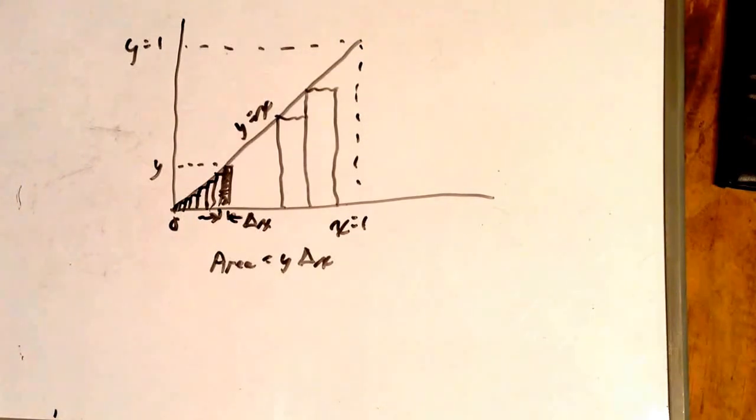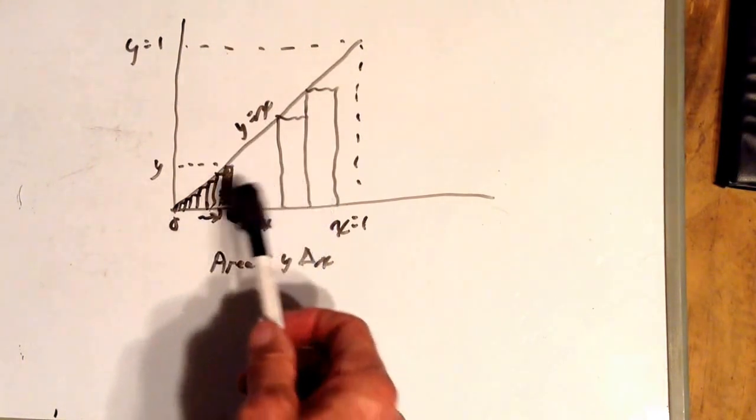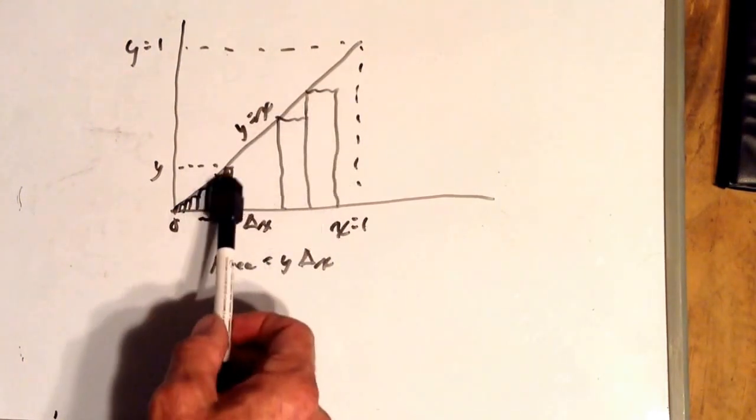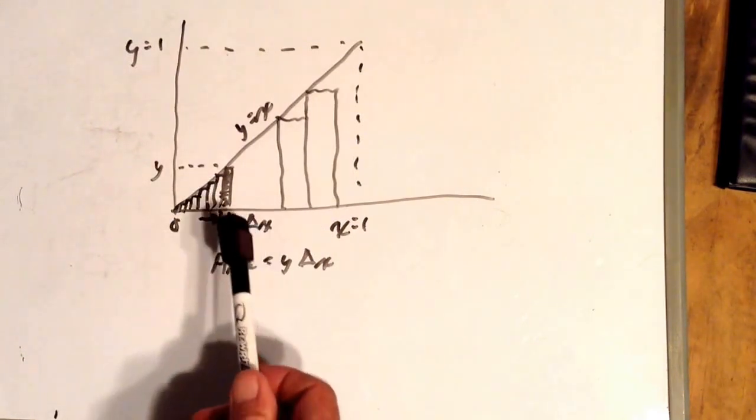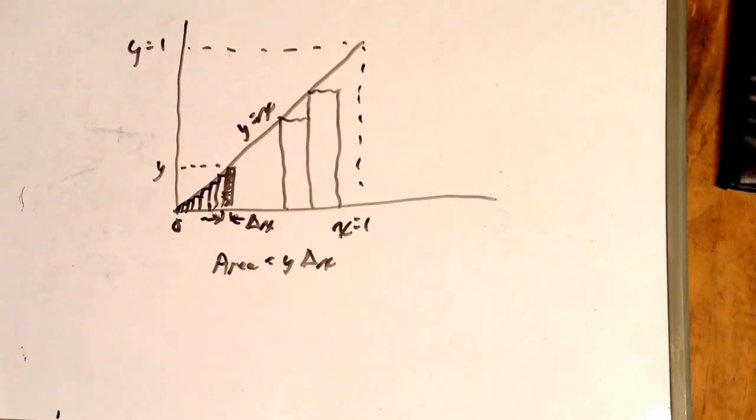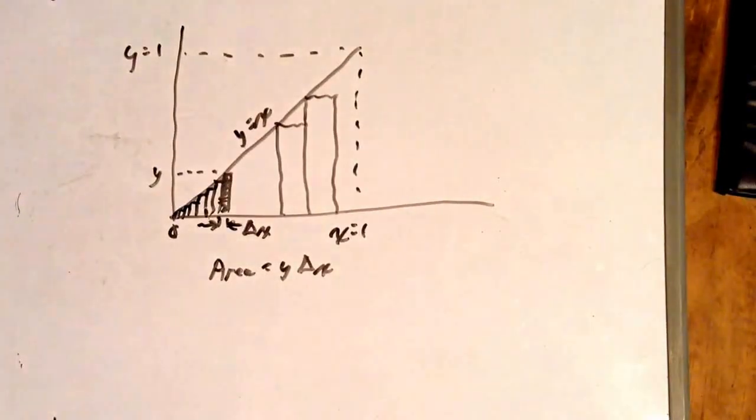If we have a lot of rectangles, delta x approaches zero. We don't have many if we draw them that wide. We have more of them if we draw them that wide. If we draw them real skinny, their area approaches the area under this line. The number of rectangles approaches infinity, and the width of delta x approaches zero. The sum of these rectangle areas equals the area of the triangle made by the line.